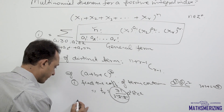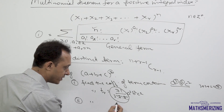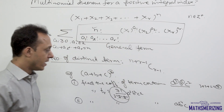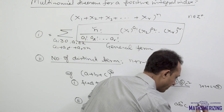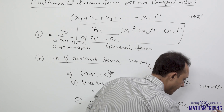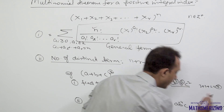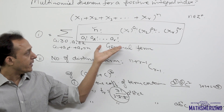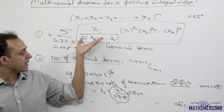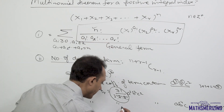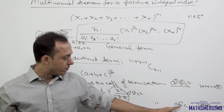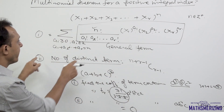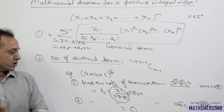Now find the coefficient of the term containing ab⁴c. Here the powers are 1 plus 4 plus 1 which equals 6, and this is not equal to n which is 7. If the sum of the powers is not equal to n, then that term will not be present in the expansion. So the coefficient of the term containing ab⁴c is simply 0.